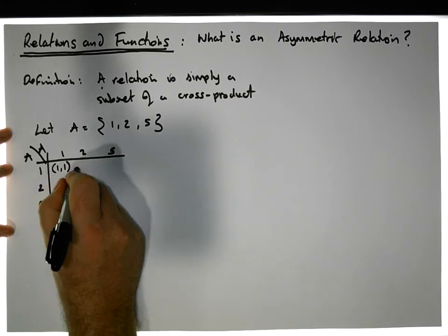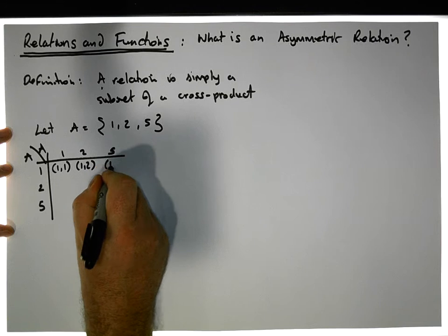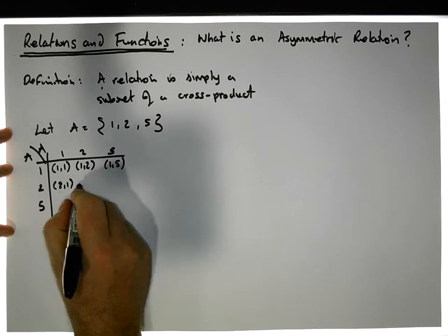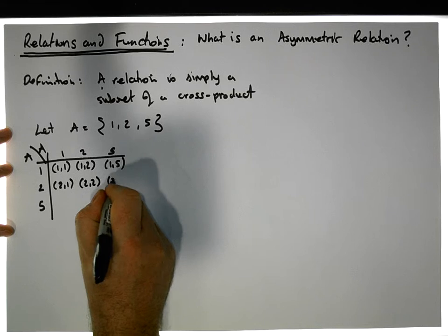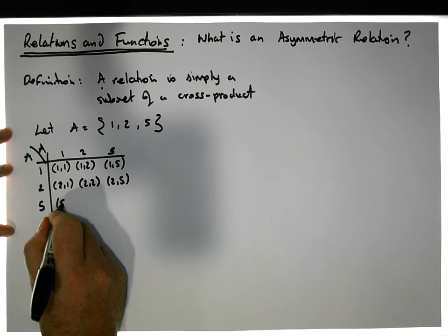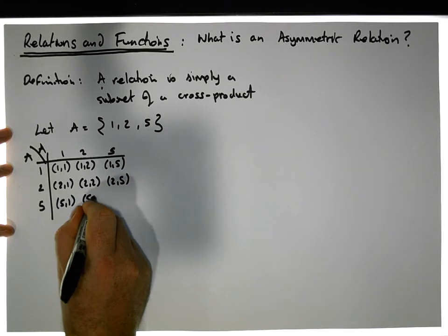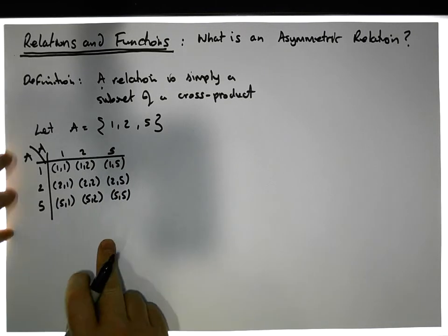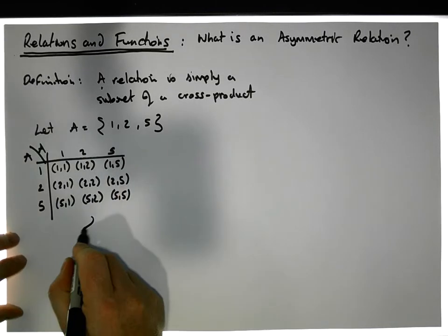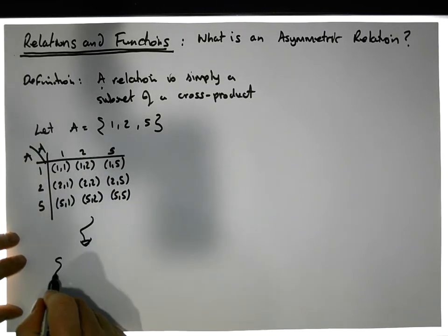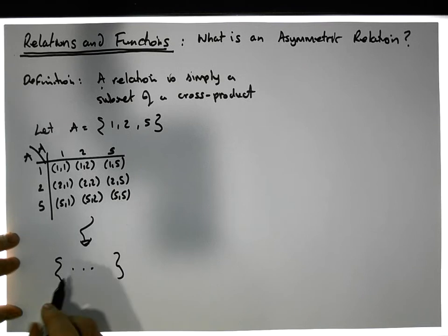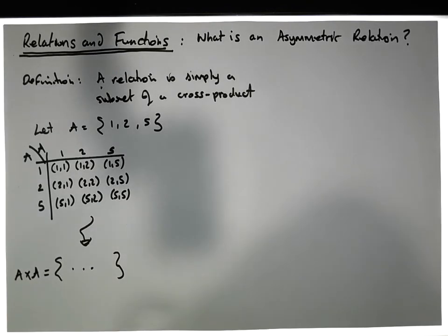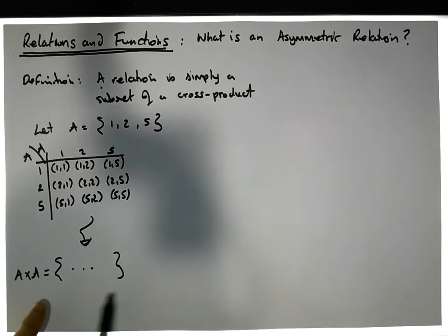From this table we construct all the ordered pairs: (1,1), (1,2), (1,5), (2,1), (2,2), (2,5), (5,1), (5,2), (5,5). This gives us the full set of ordered pairs forming the cross product A × A, and from this we can choose subsets.